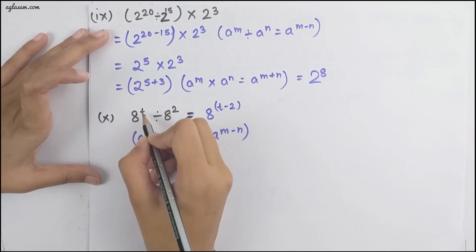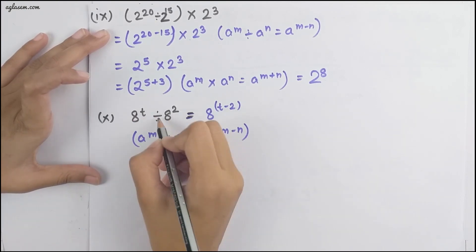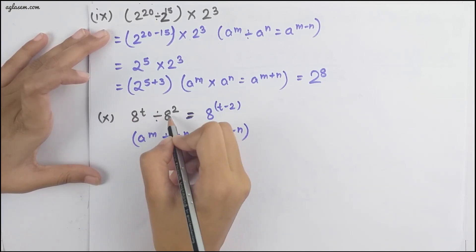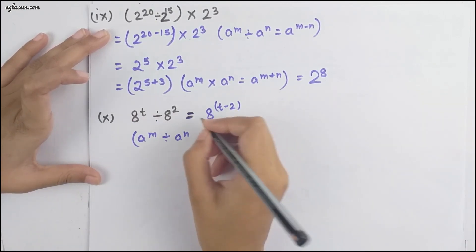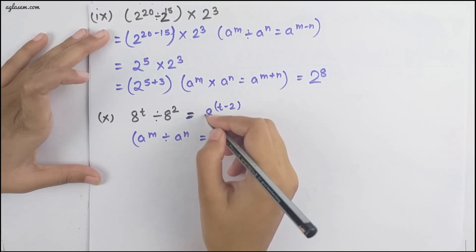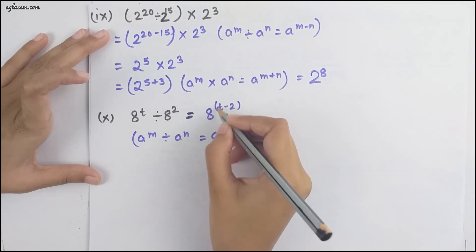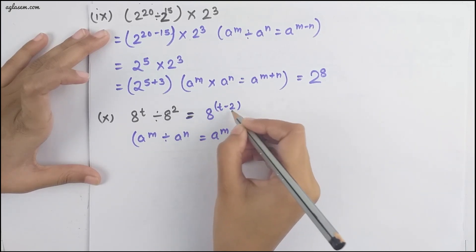Moving to the next part, we have a raised to the power t divided by a raised to the power 2, which equals a raised to the power t minus 2.